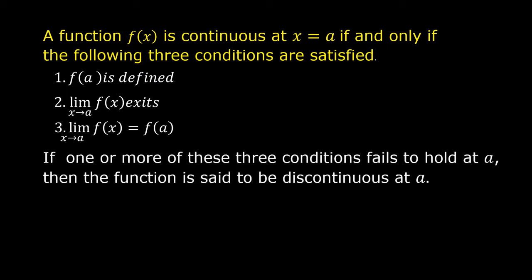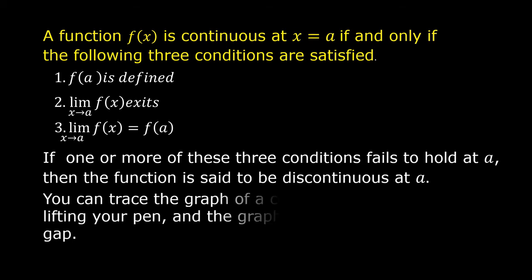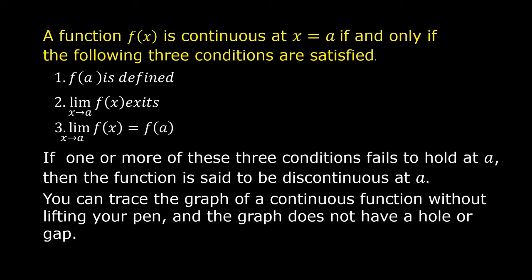If one or more of these three conditions fails to hold at a, then the function is said to be discontinuous at a. You can trace the graph of a continuous function without lifting your pen, and the graph does not have a hole or gap.